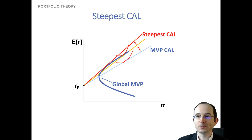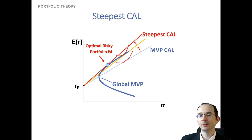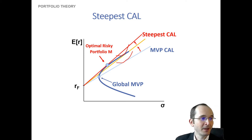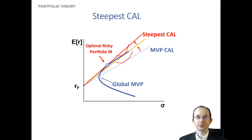The steepest capital allocation line we can draw is one that is tangent to the efficient frontier of risky assets at some optimal risky portfolio. We have to be tangent because beyond that, there's no risky portfolio we could feasibly construct with a higher Sharpe ratio. So this is the optimal risky portfolio in terms of its trade-off between risk and return.